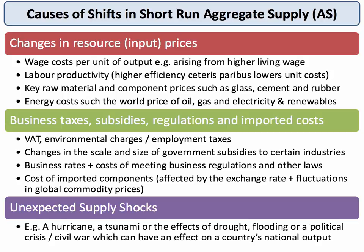Supply at a macro level can also be affected by supply shocks — unexpected, unanticipated events, often affecting developing and emerging countries. For example, a hurricane, a drought, flooding, a tsunami. We've seen around the world the impact of civil war, political crises, and sanctions, which limit the supply potential of a country, particularly in the short term.